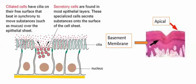We're taking a look at an example here, and you can see how there is an apical and basement part of this epithelial tissue. We're looking at ciliated cells and secretory cells, and notice these very important types of cells.